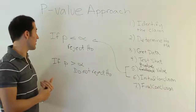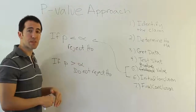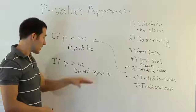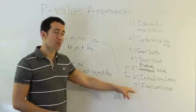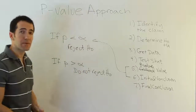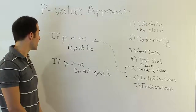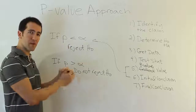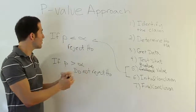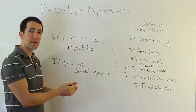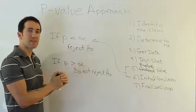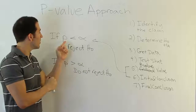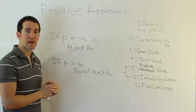Everything else remains the same: if you reject H₀, you support HA; if you do not reject H₀, you do not support HA. Then form your final conclusion as in the problem videos. The key thing to remember about the p-value approach: a small p means something unusual is happening, so we reject the null hypothesis. Small p — reject H₀. Just remember that and you should be fine.